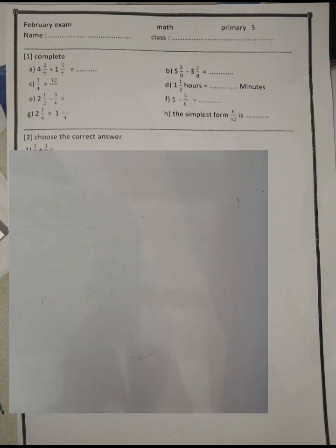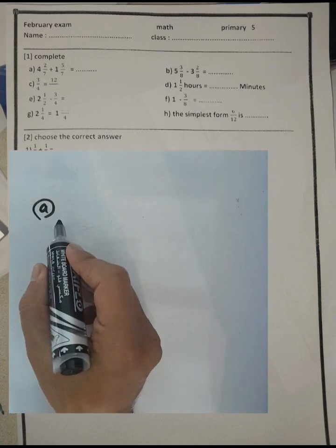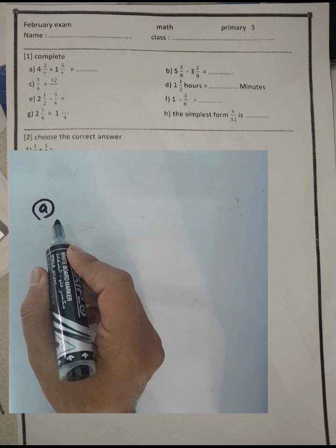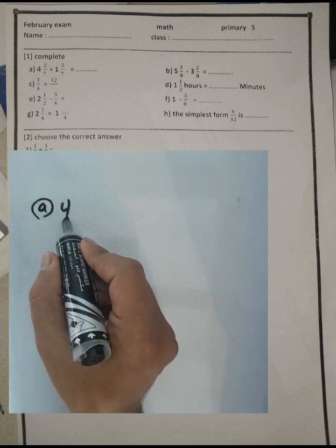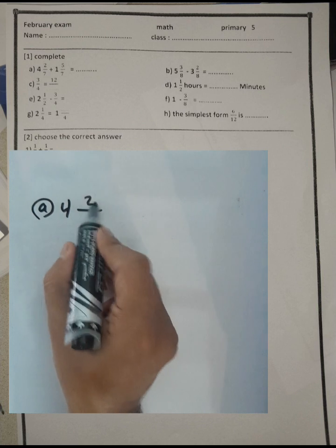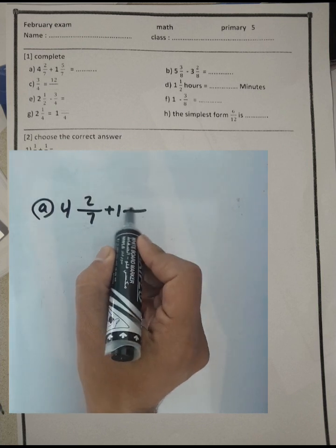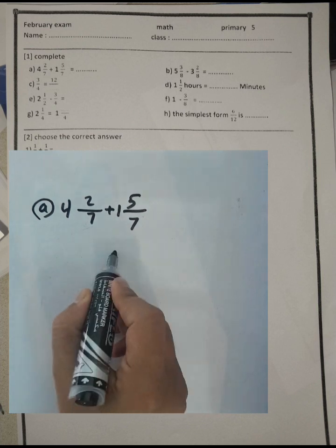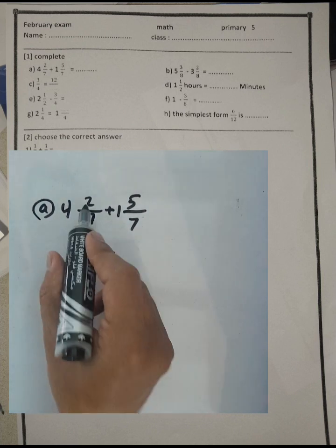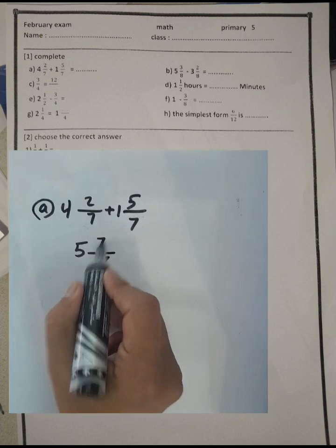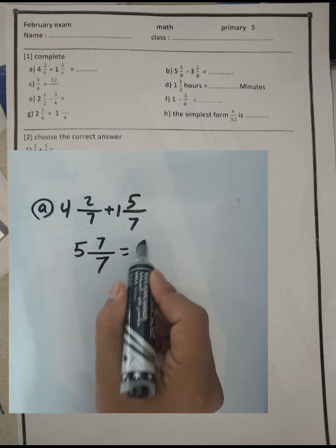Question one, letter A: complete the following. Four over seven plus one and two over seven. We can write seven in the numerator. Four plus one equals five, and two plus five equals seven. Seven divided by seven equals one. One plus five equals six, so the result will be six.